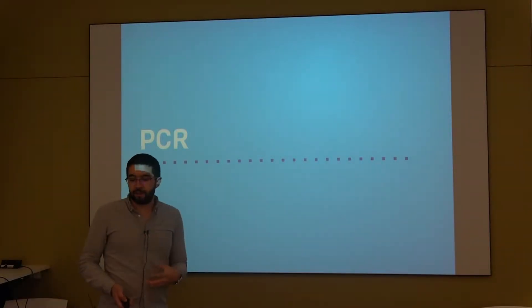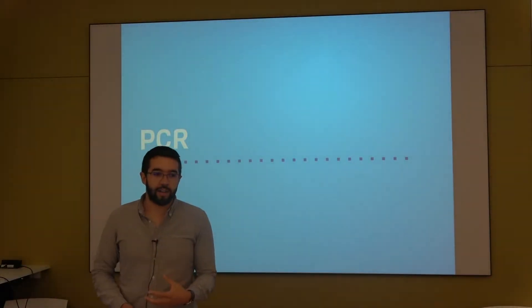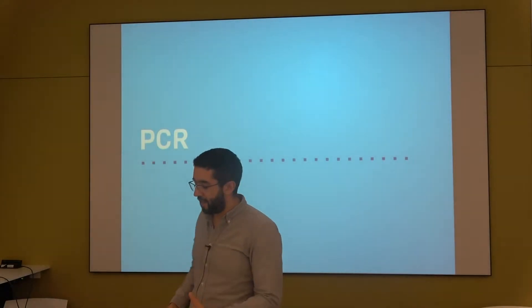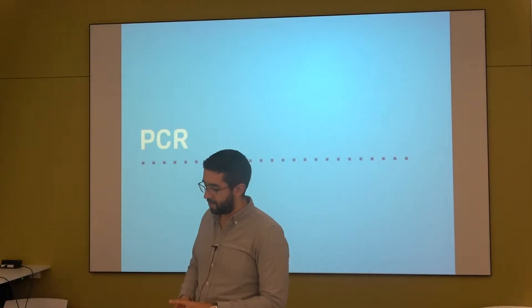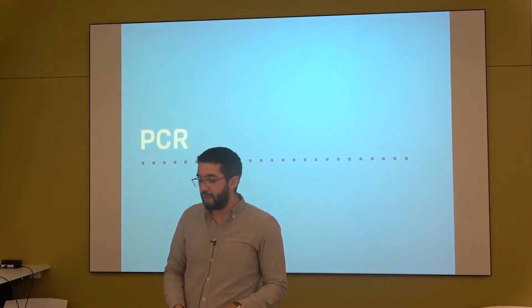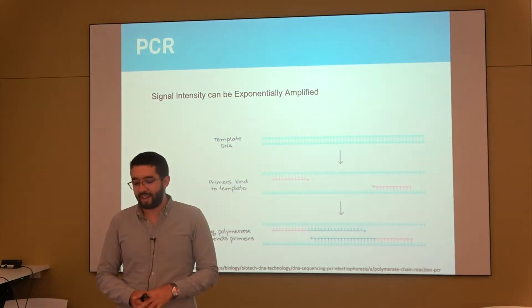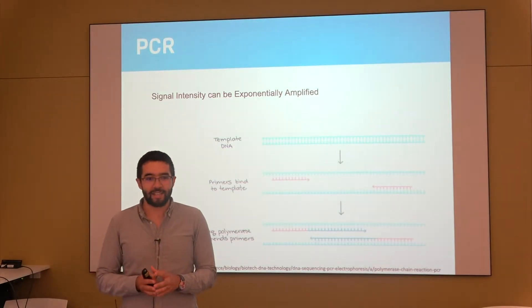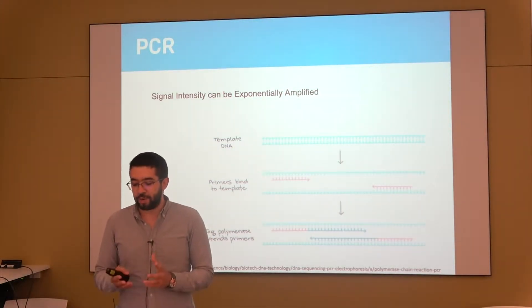So there's a way to deal with this error and it's PCR. PCR is a polymerase chain reaction. You don't need to learn that word but PCR is how everybody refers to it. This allows us to increase the signal intensity of the dots exponentially.